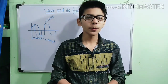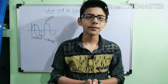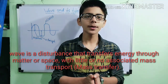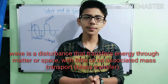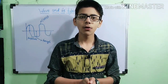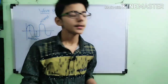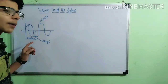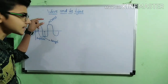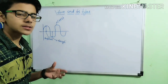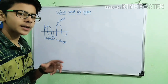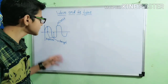First of all we have to know about waves. What is a wave? A wave is a disturbance which propagates energy from one place to another without the transportation of matter. Looking at the diagram of a wave: the elevation of the wave is known as the crest, and the depression of the wave is known as the trough.